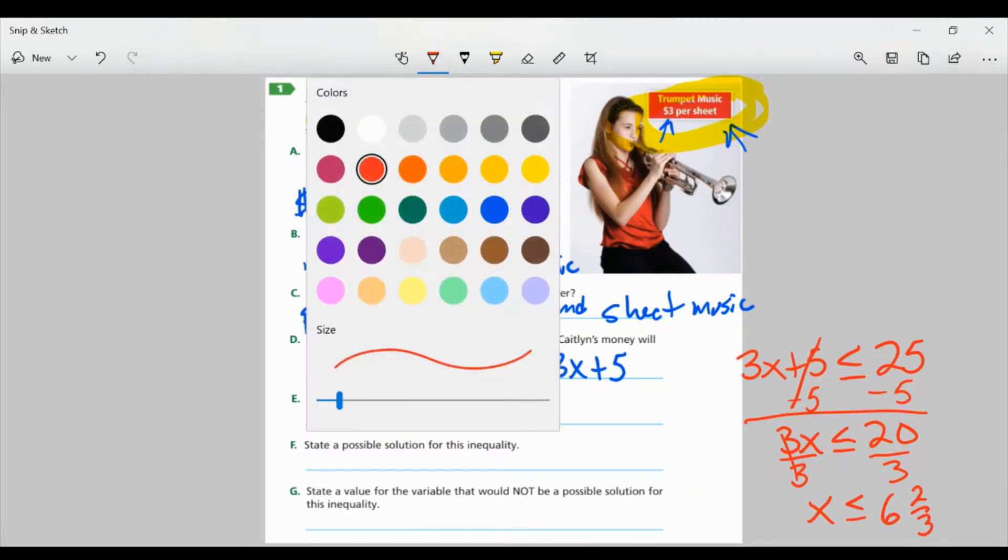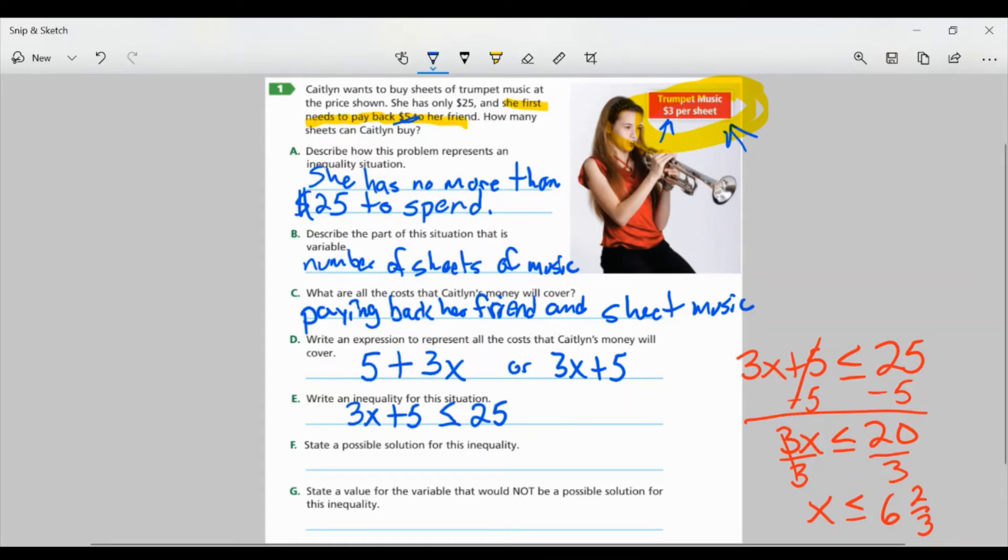So that moves it from the left side of the inequality to the right side. 3X stays the same. 25 minus 5 is 20. Now, from here, I need to divide because that's the opposite of multiplying. And I would have X is less than or equal to 20 over 3, which is 6 and 2 thirds. Now that tells me that the amount of sheet music she can get or the sheets has to be less than 6 and 2 thirds or equal to 6 and 2 thirds. She can't buy 2 thirds of a music sheet. So a possible solution would be 6. And realistically, she's going to be able to buy anything that is less than or equal to 6.